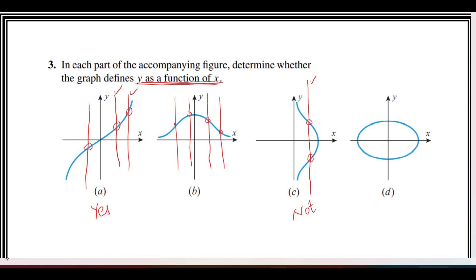In the fourth one, if you draw any vertical line, you can see that it touches the graph more than once. That means this is also not defining y as a function of x, meaning this is not the graph of a function. Thank you.